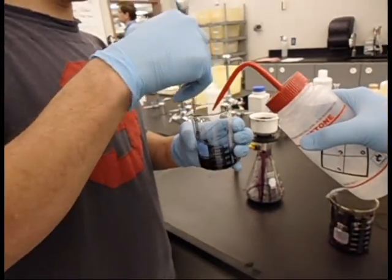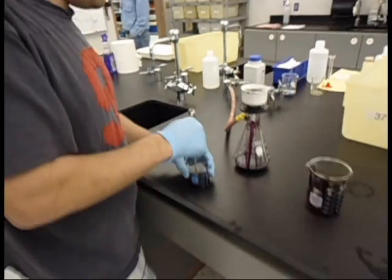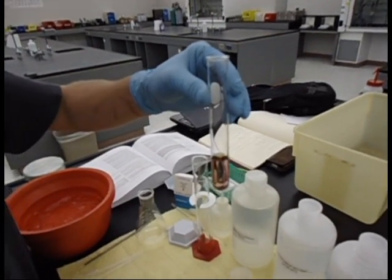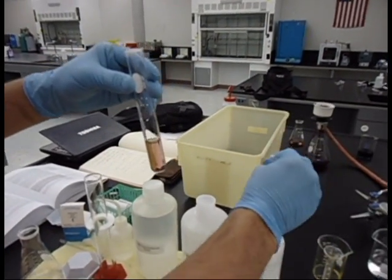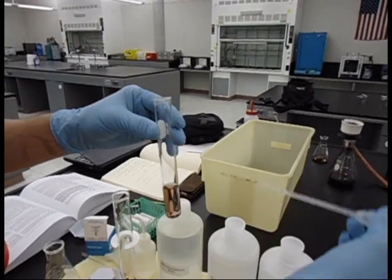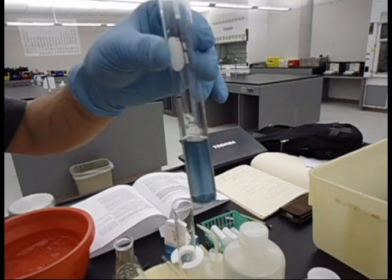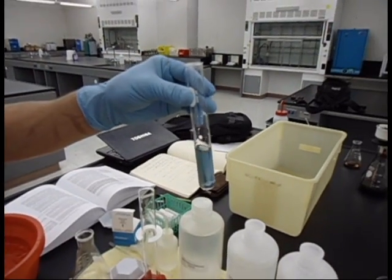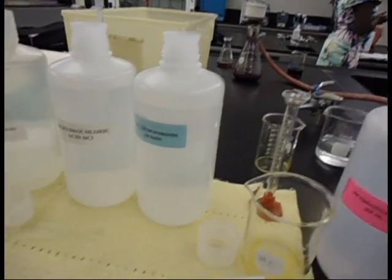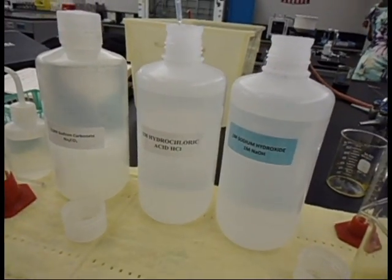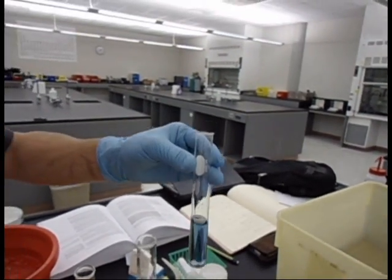We're going to show a fun property of the dye. We're going to add some base first and change the color. You can see a nice blue color forming. Now if we add some acid—the base was one molar sodium hydroxide and this is one molar hydrochloric acid—we're going to add that in there and it should turn a nice yellow color.